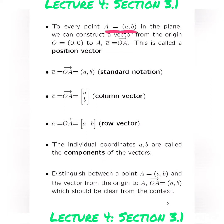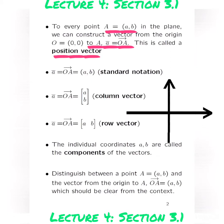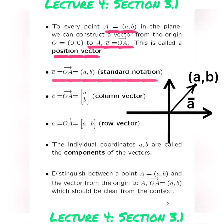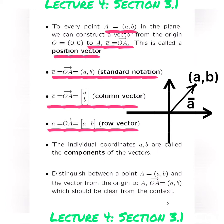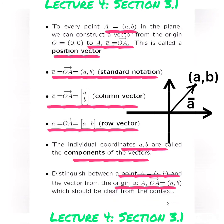If you're given a coordinate point A, given by AB in the plane, you can construct a vector from the origin to that given point A, and you'll denote it by 0A bar — that's called the position vector. So for every point in the plane, you can construct a position vector. The standard notation will be given by that OA bar. You can also write it as a column vector or a row vector. The individual coordinates AB are called the components of the vectors. Be very careful to distinguish between a point AB and a vector centered at the origin OA bar — the two are not the same. One indicates a vector and the other indicates a coordinate point.